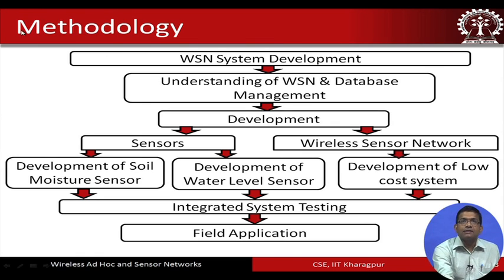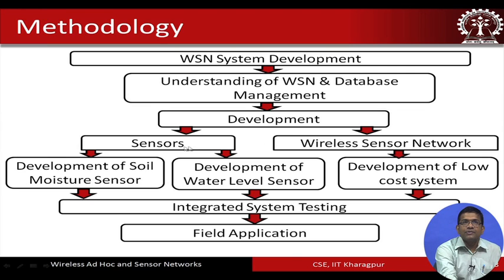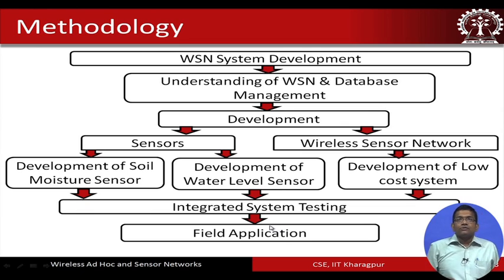The overall methodology involved understanding the wireless sensor network and database management, then developing the system with respect to the specific sensors connected to the sensor nodes — particularly a soil moisture sensor and a water level sensor. This was followed by development of the low cost network, overall integration into the embedded system, testing, and finally deploying it in the field for irrigation management in agricultural applications.